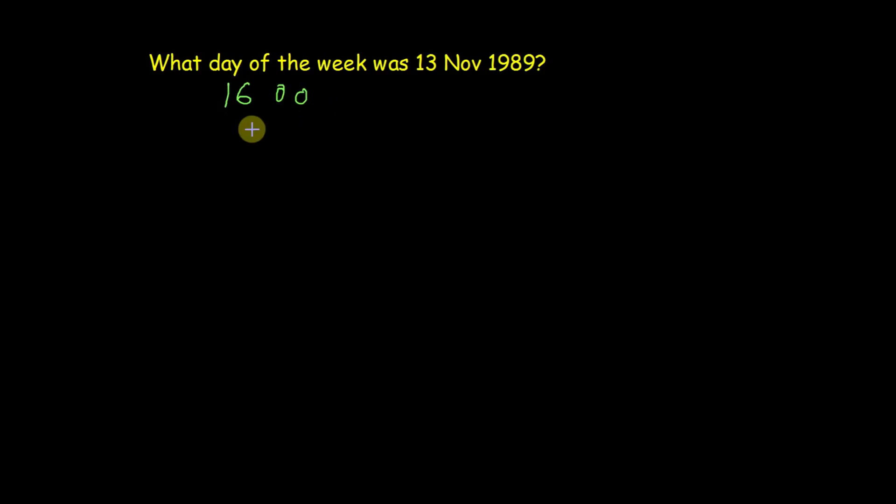I'll tell you why. Here maximum nearest possible leap year is 1600. Then we have 300 more years and 88 years, and then we have more 10 months and 13 days. Now we know century and leap year has zero odd days and 300 years have one odd day.